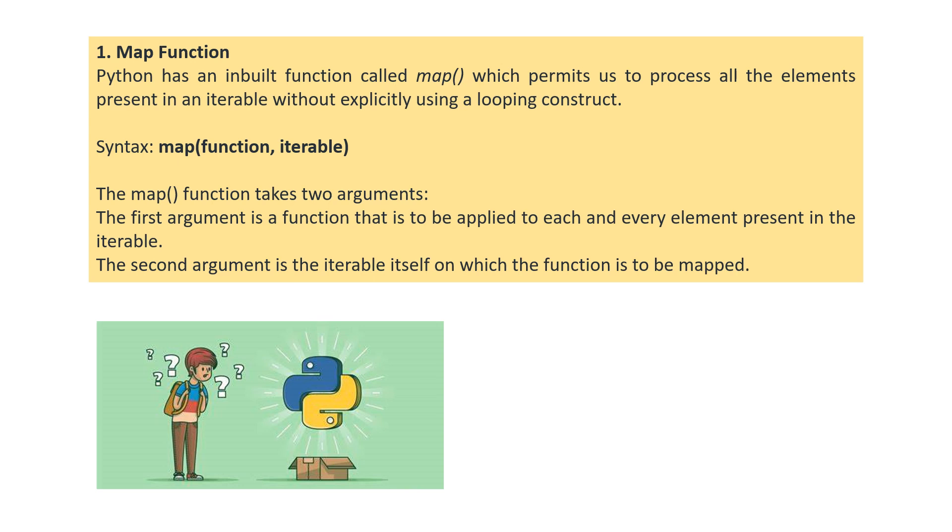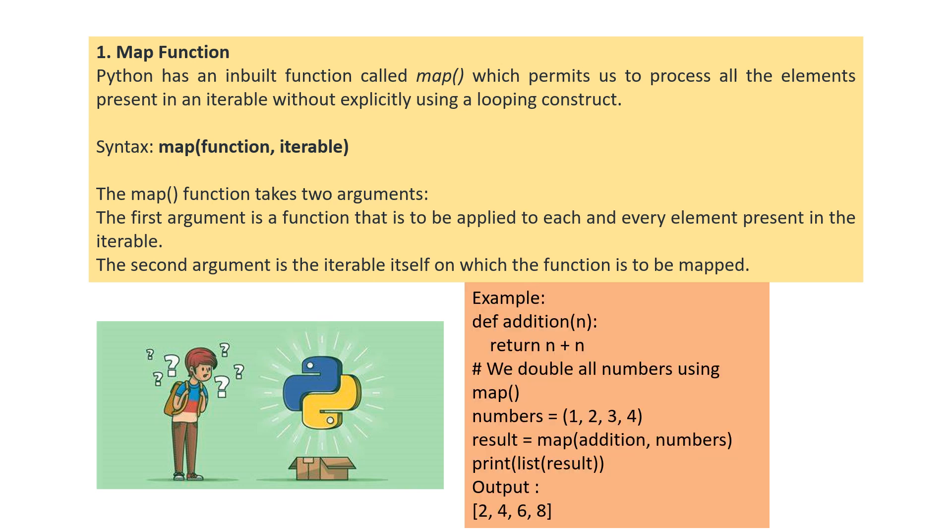The first important concept is the map function. It is an inbuilt function which permits us to process all the elements present in an iterable without explicitly using a loop constraint. The syntax for this map function is map of function comma iterable. The first argument is a function that is to be applied to each and every element present in the iterable. The second argument is the iterable itself on which the function is to be mapped. This can be clearly understood from this following example.